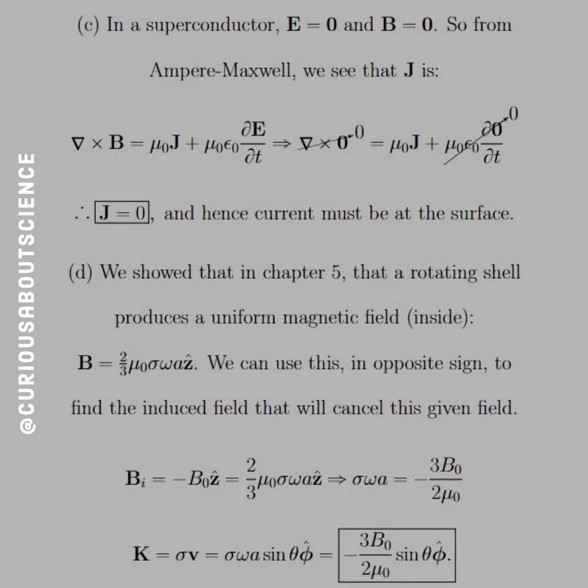And from there, what we can do is solve for σωA, which is everything that's happening on the surface. And so what we see here is that equals negative 3B₀ over 2μ₀.